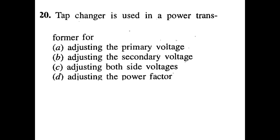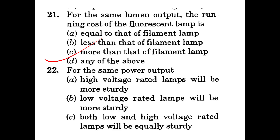Tap changer is used in a power transformer for — adjusting the primary voltage, adjusting the secondary voltage, adjusting both side voltages, or adjusting the power factor? Answer: adjusting the secondary voltage. For the same power output, high voltage rated lamps will be more steady, low voltage rated lamps will be more steady, or both equally steady? Answer: low voltage rated lamps will be more steady.